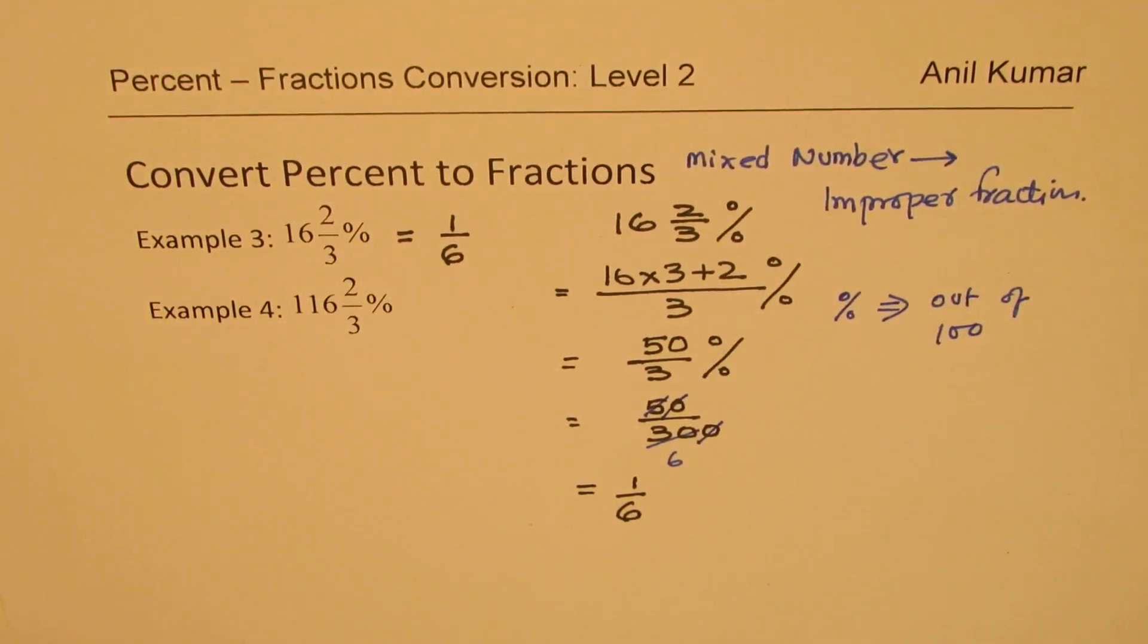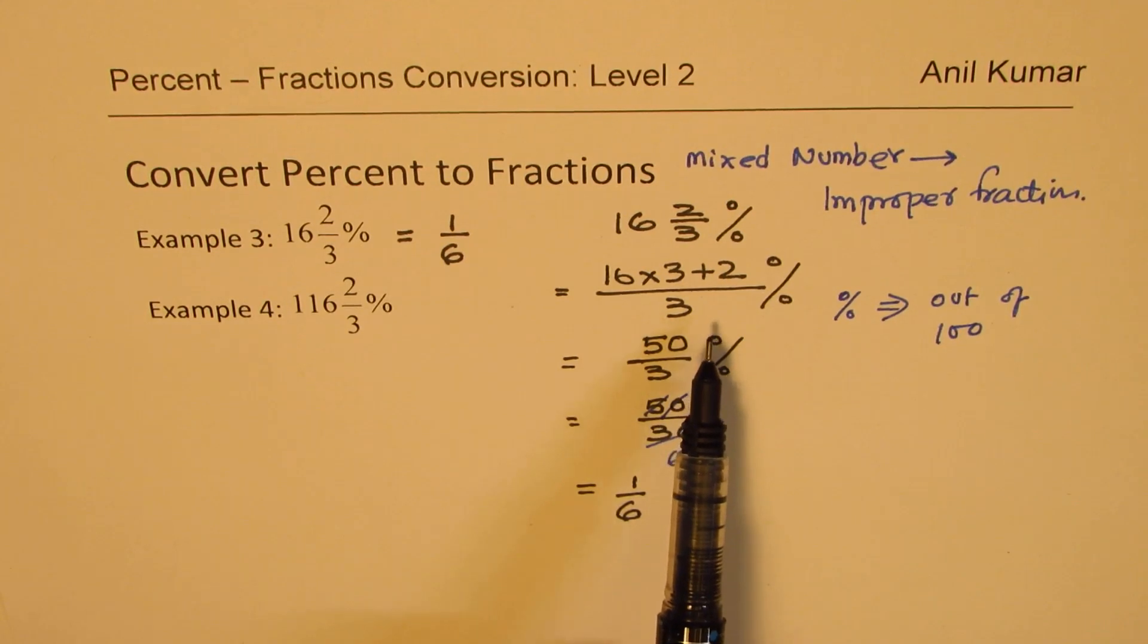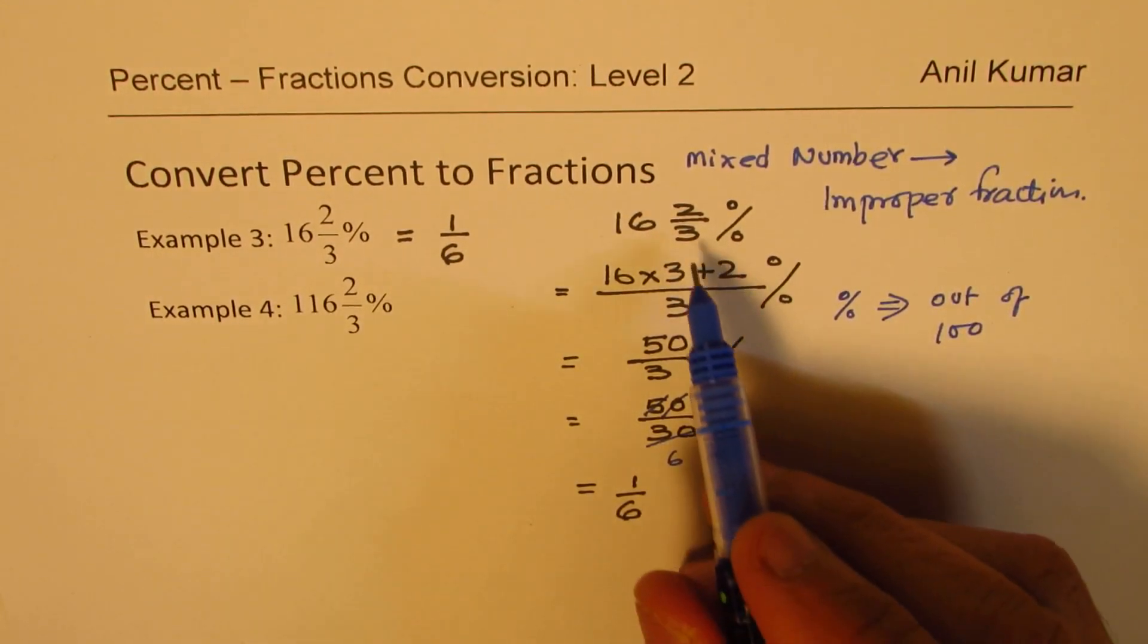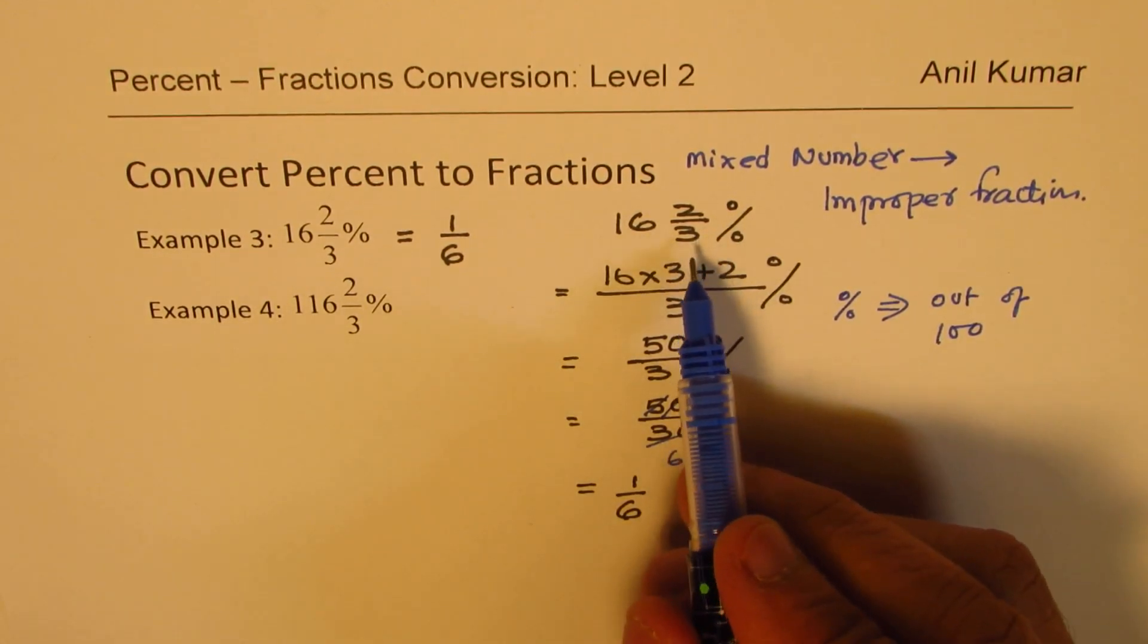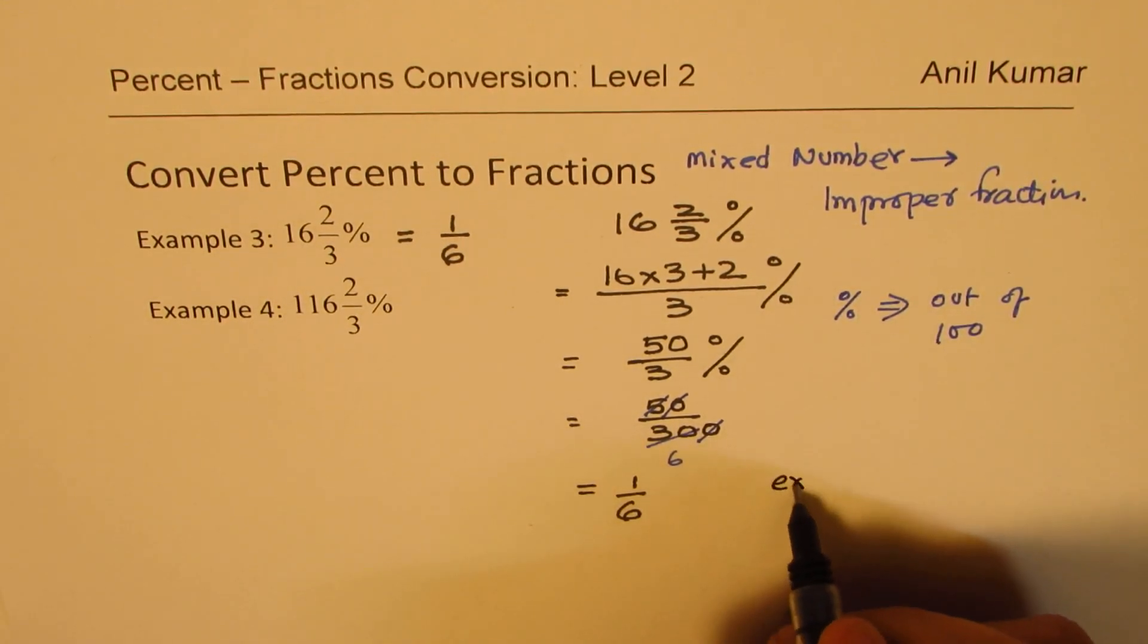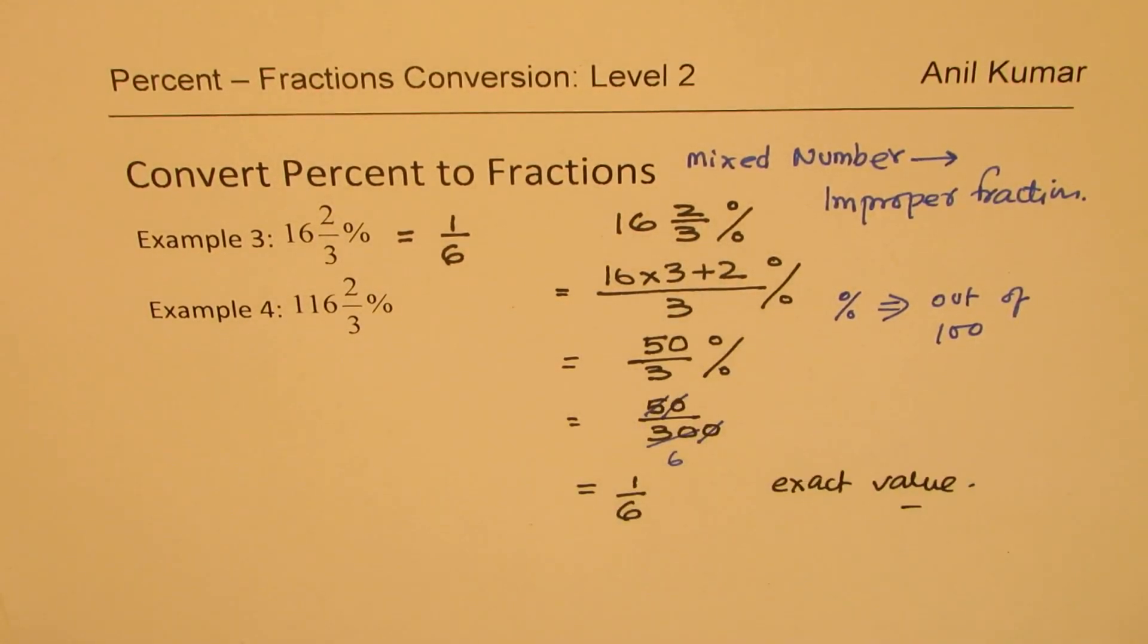So this 16 2/3 as fractions is 1 sixth. Do you see? Now you will understand that this approach of making mixed number as a fraction is a better approach. Easily, we could get our answer. Does this make sense to you? Perfect. So I kind of like this kind of an approach. Well, you could do with decimal numbers also. But the problem here is when you divide by 3, what do you get? You get recurring numbers. That is a problem.